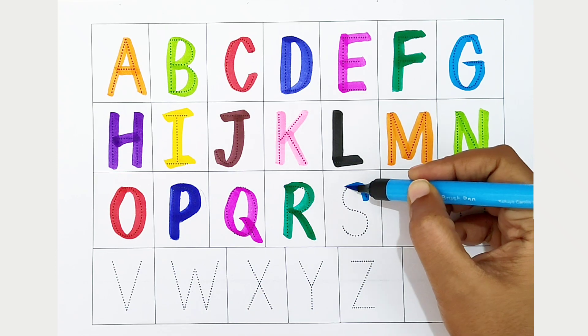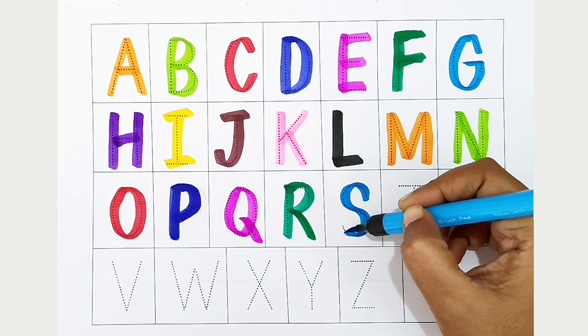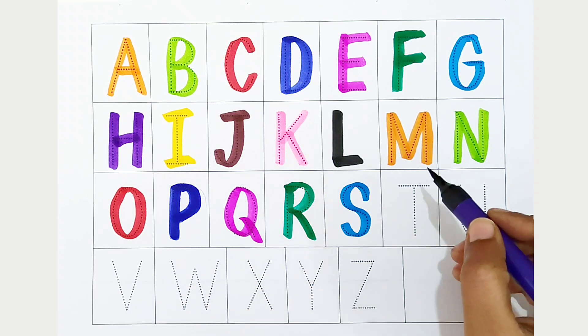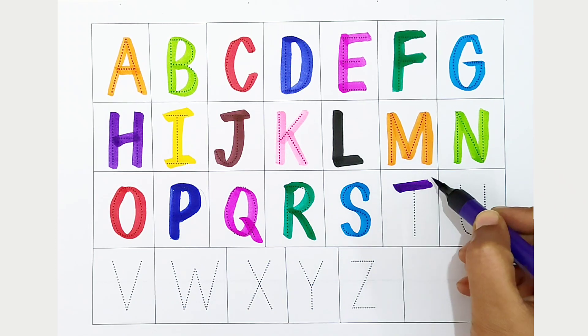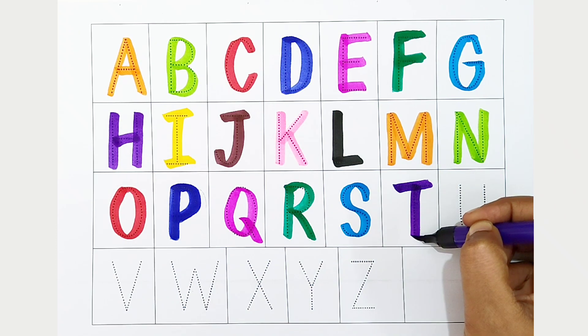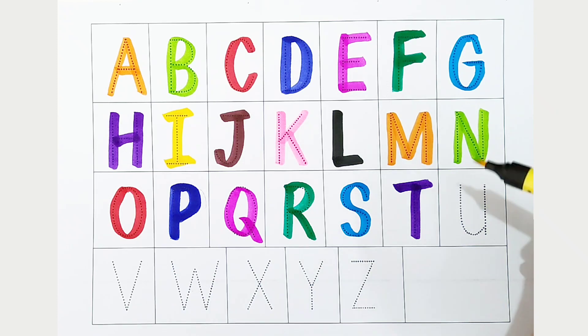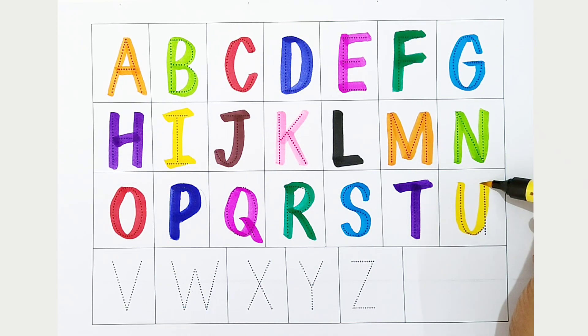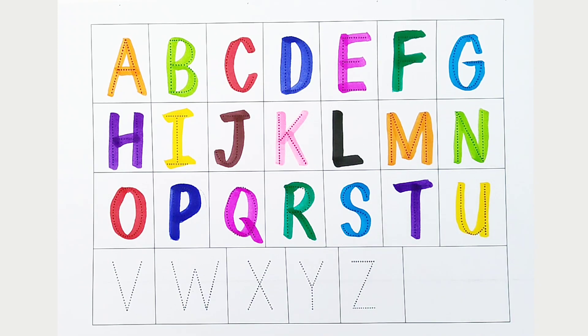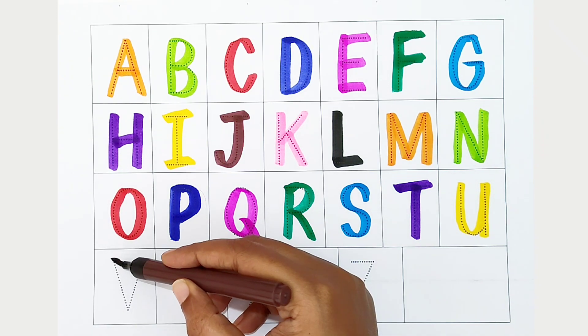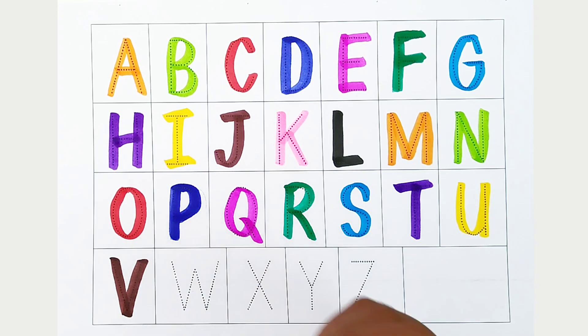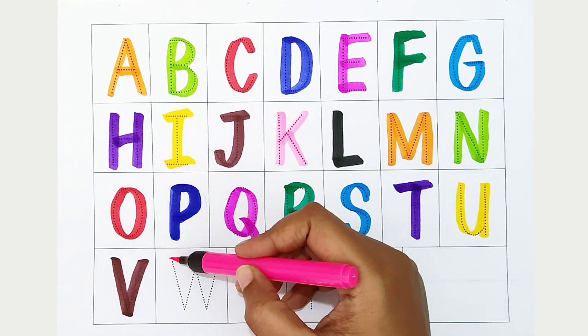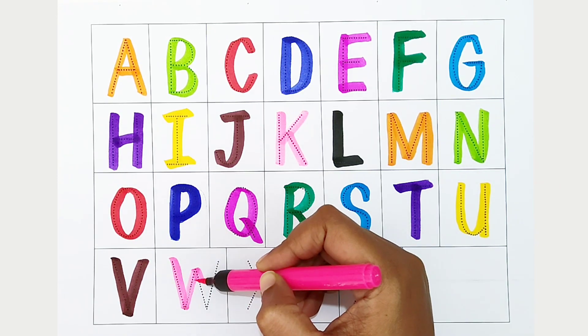S, light blue color, S is for sunshine. T, violet color, T is for tiger. U, yellow color, U is for unicorn. V, brown color, V is for vortex. W, light pink color, W is for water.